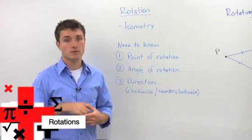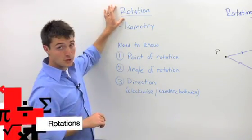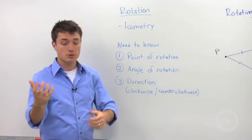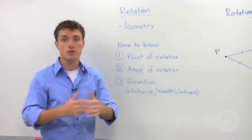There are four types of transformations, one of which is a rotation. Rotation is an isometry, which means the beginning image and the new image are going to be congruent.